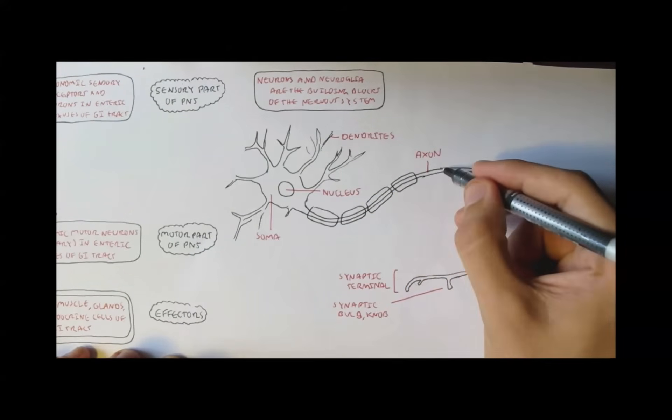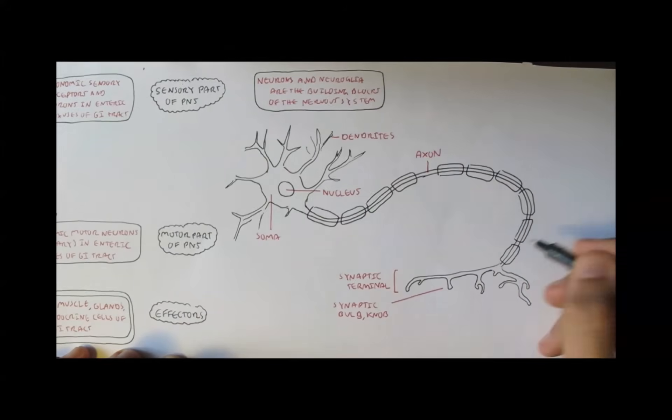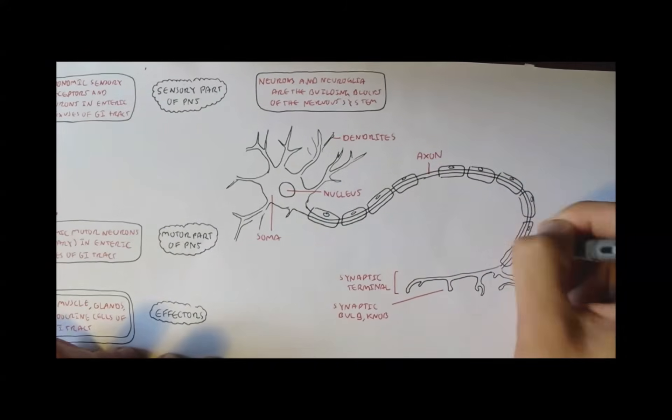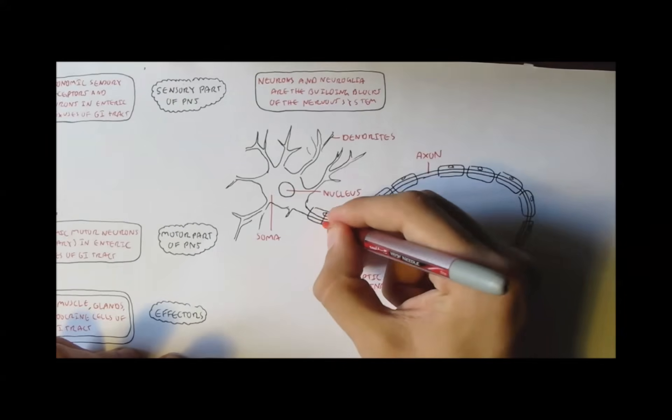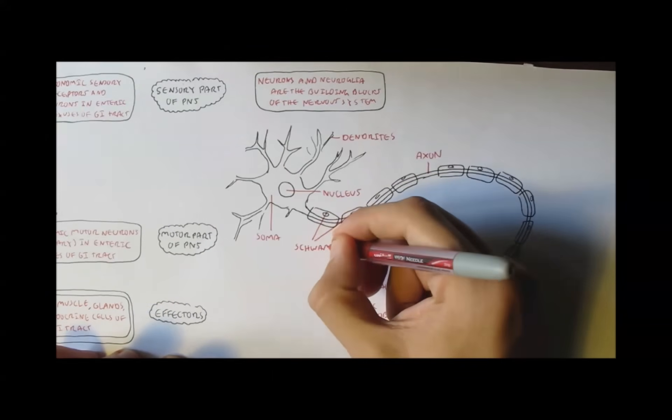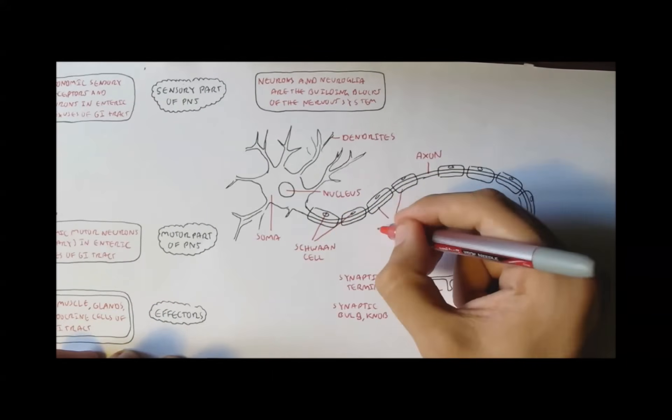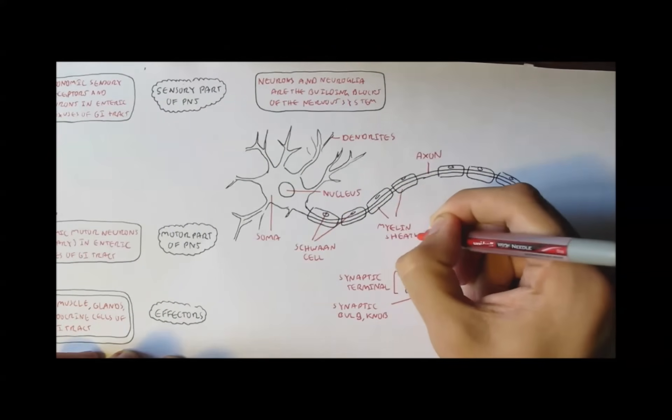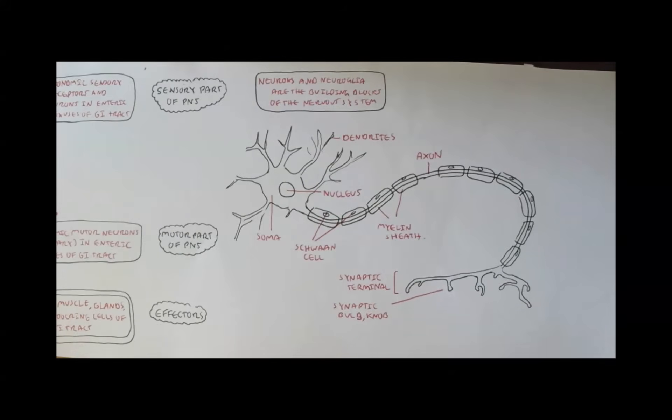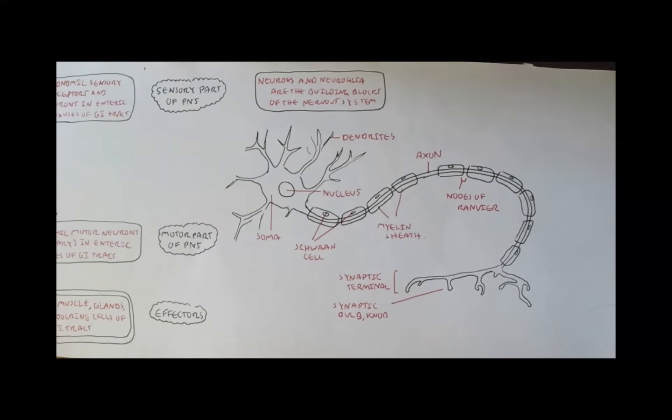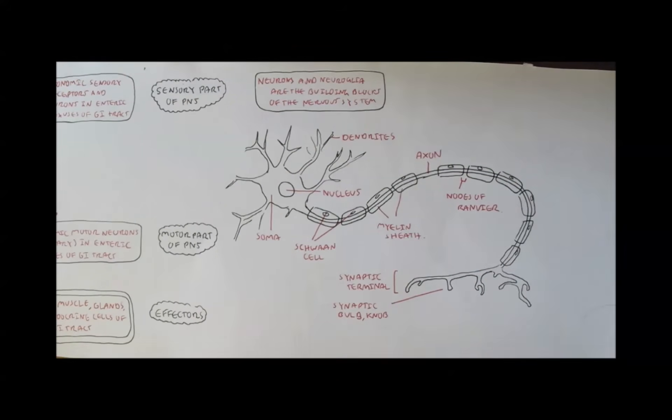Now, surrounding the neuron membrane are special glial cells, called Schwann cells. And these Schwann cells produce myelin. Myelin covers segments of the membrane, providing insulation and helps with the conduction of an impulse. Between the myelin sheaths are gaps called nodes of Ranvier.